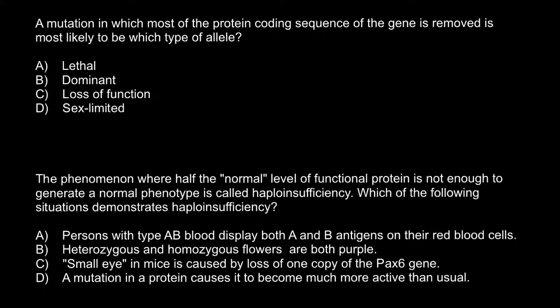Actually, any of these answers can be correct. The problem today is to choose the answer that would be more appropriate than the rest, since all of them would be possible. For example, answer A - lethal. Of course, when we have one allele, most alleles are present in at least two copies. Some alleles can be present in more than two copies, as some of our genes are duplicated, so we have many locations for some genes.